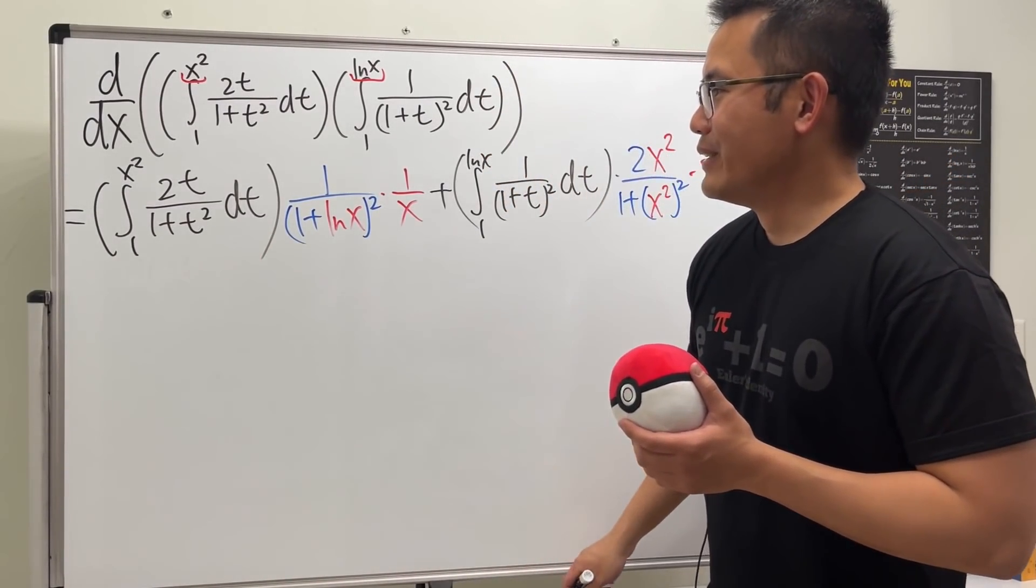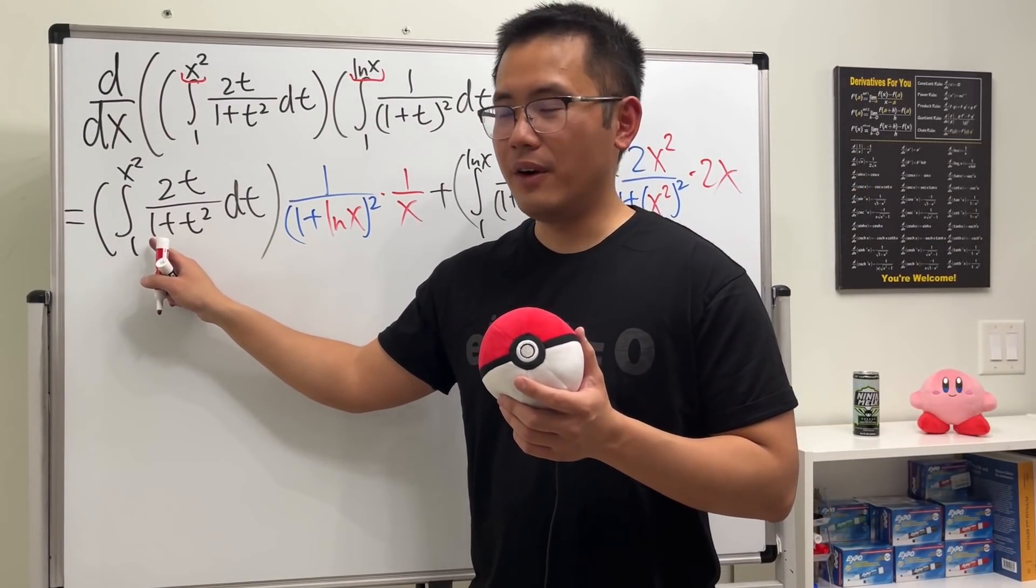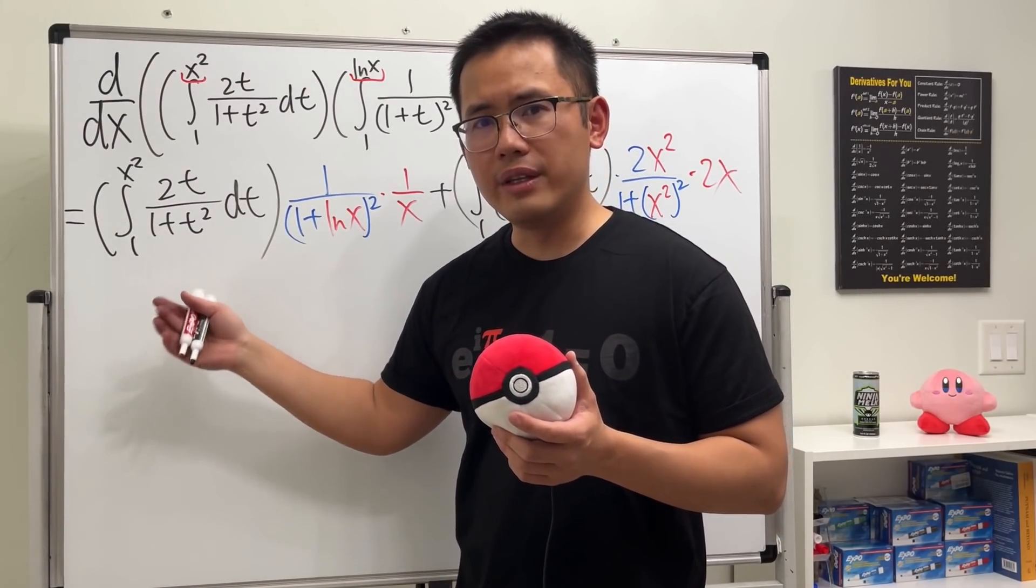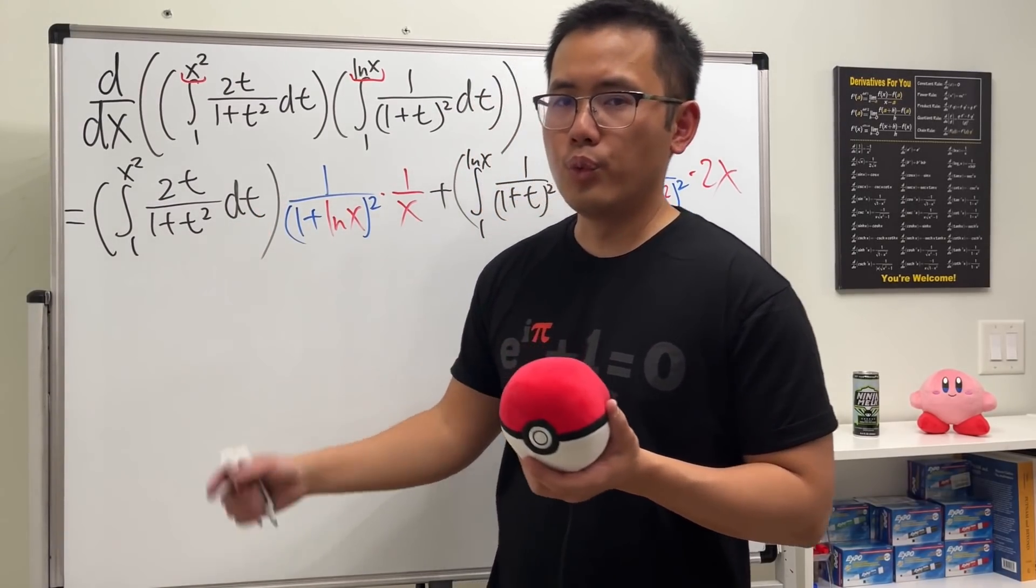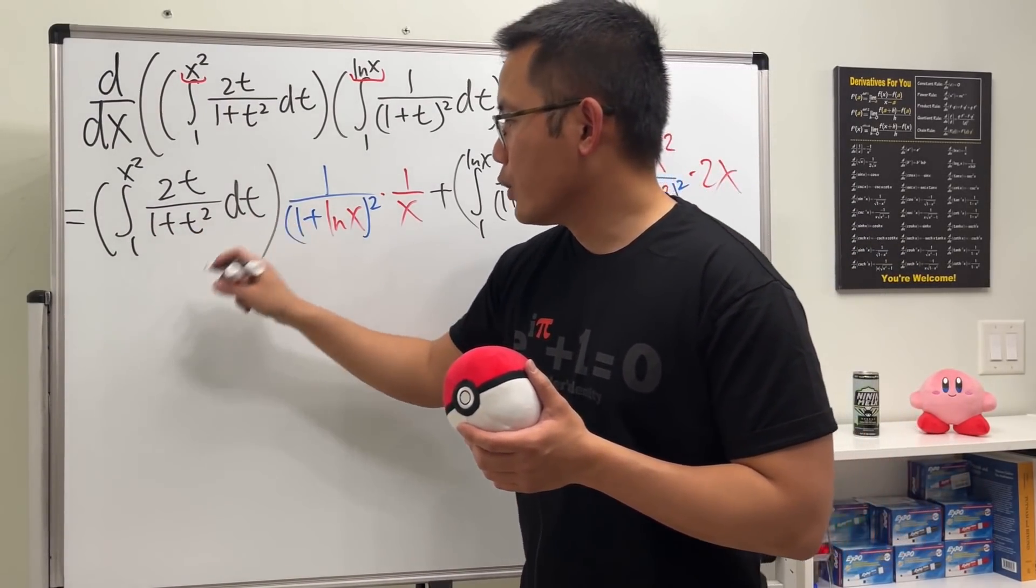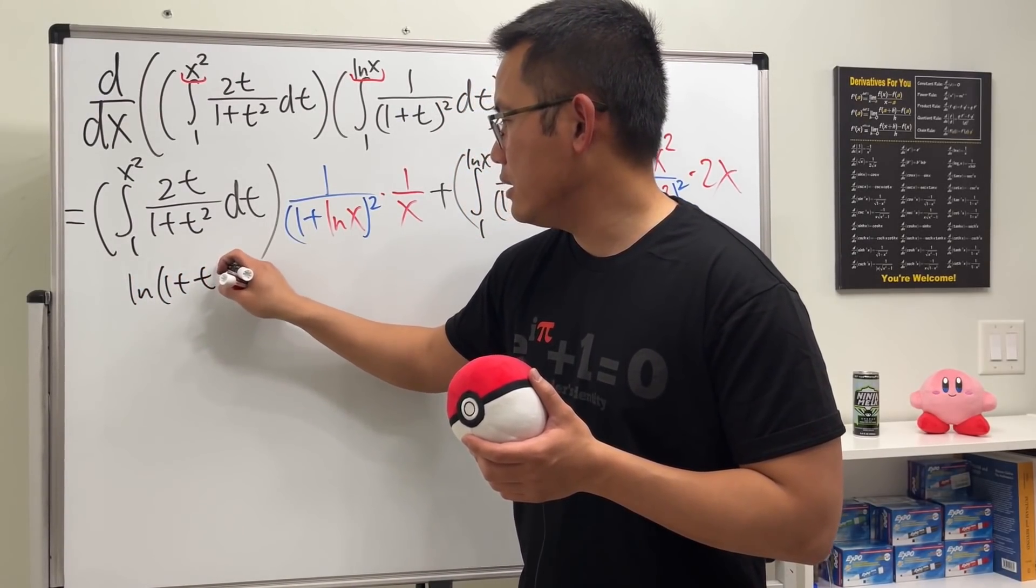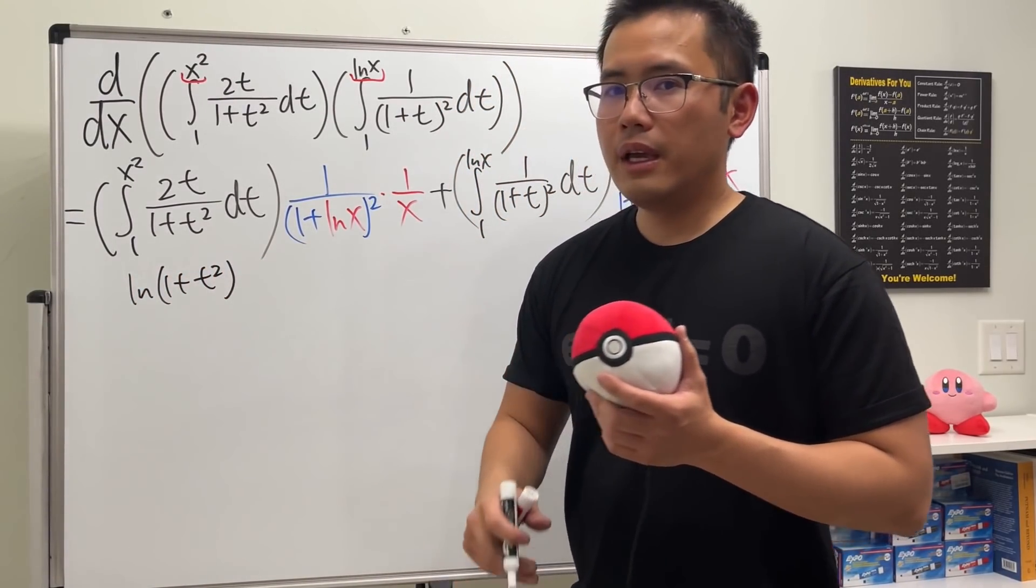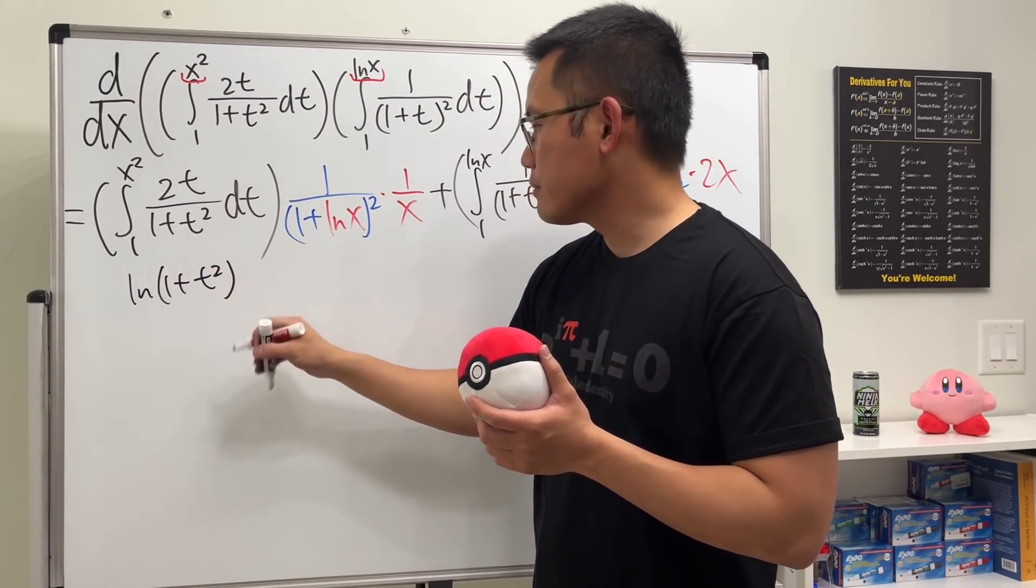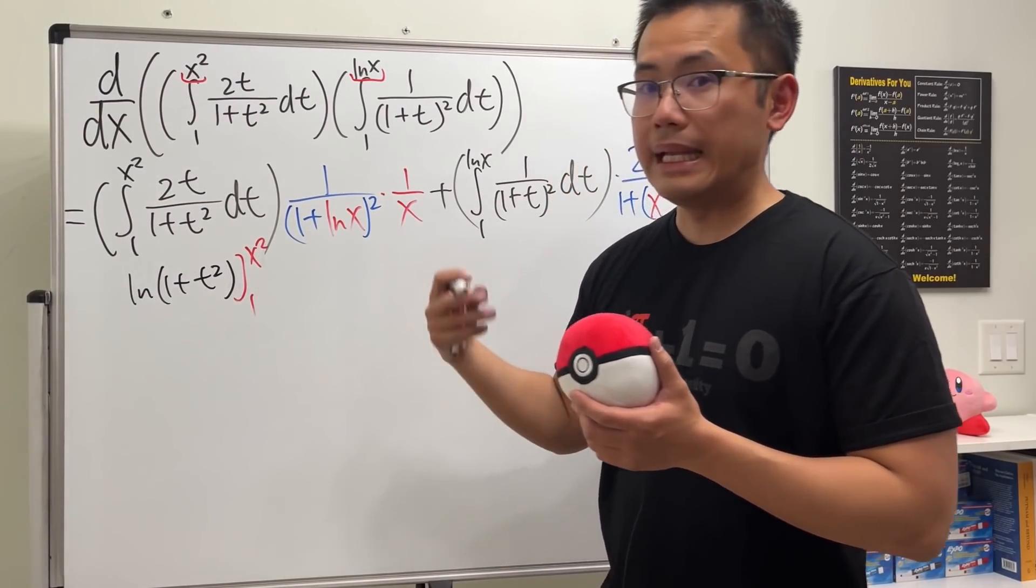So let's do this in our head. To integrate this, notice that the derivative of the bottom is precisely 2t. So this is just integrating 1 over u, right, in the u world after you do the u substitution, letting u equal the bottom. So we will just get ln of 1 plus t squared, like so.